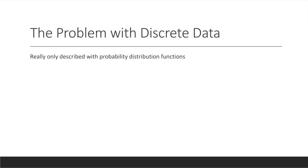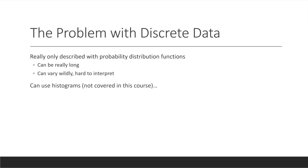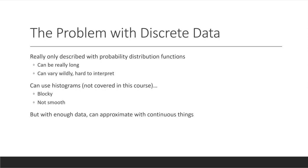Discrete data really is only described with a probability distribution function. The problem with that is it can be really long, vary widely, and often be hard to interpret. You can use histograms, although they're not covered in this course, but those are very blocky and not very smooth. But with enough data you can approximate these discrete things with continuous things, and that's what we're going to start learning about today.